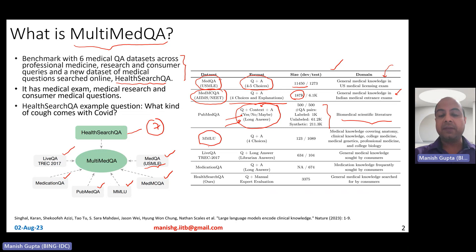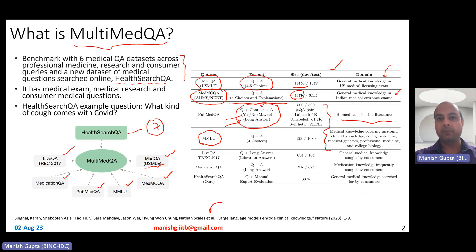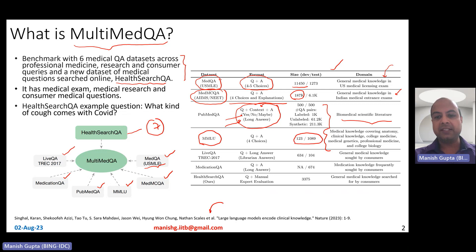MMLU is a benchmark containing several datasets, of which they consider some medically oriented subsets. In this particular work to create MedPalm, they use subsets covering medical knowledge including anatomy, clinical knowledge, college medicine, medical genetics, professional medicine, and college biology. Again, it's a relatively small dataset with multi-choice questions.